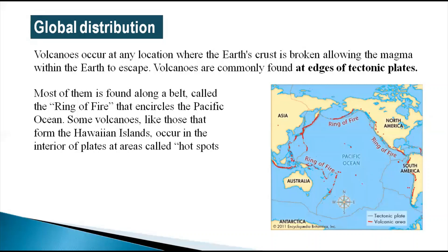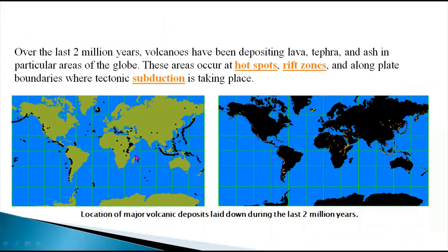Most volcanoes are found along a belt called the Pacific Ring of Fire, which encircles the Pacific Ocean. Some volcanoes, like those that form the Hawaiian Islands, occur in the interior of plates and are called hot spots. You can see the different continents — North America, South America, Asia, and Australia — and the volcanoes occurring along the corners of their plates. The Pacific Ring of Fire represents these hot spots and weakened zones where plates meet.